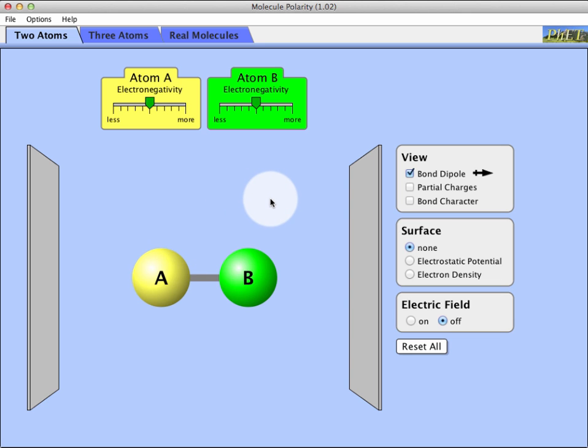Electronegativity is something where you have to have a bond present to even measure. And that also means that if we have something like right now, the situation where atom A's electronegativity is the same as atom B's, that bond has no polarity whatsoever.